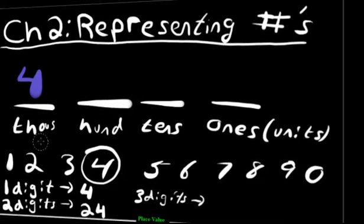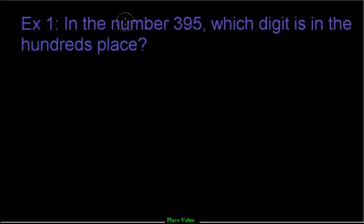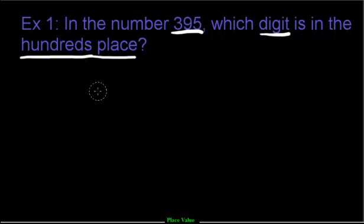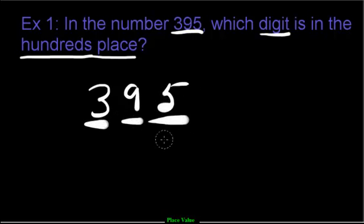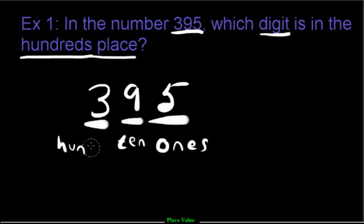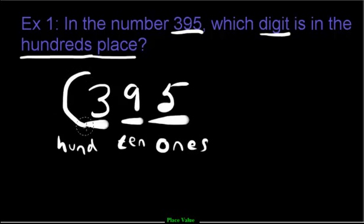Let's do some examples. The question says: in the number 395, which digit is in the hundreds place? It's always important to underline key information. Let's write it out: three hundred ninety-five. Label each digit - this is the ones, this is the tens, this is the hundreds. They're asking which digit is in the hundreds place. Since we labeled it, we can look at the hundreds place and see it's a three.